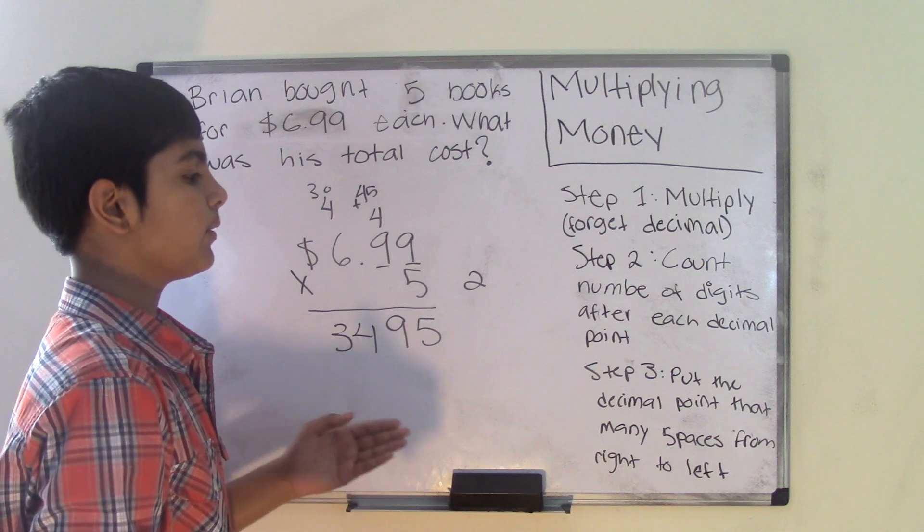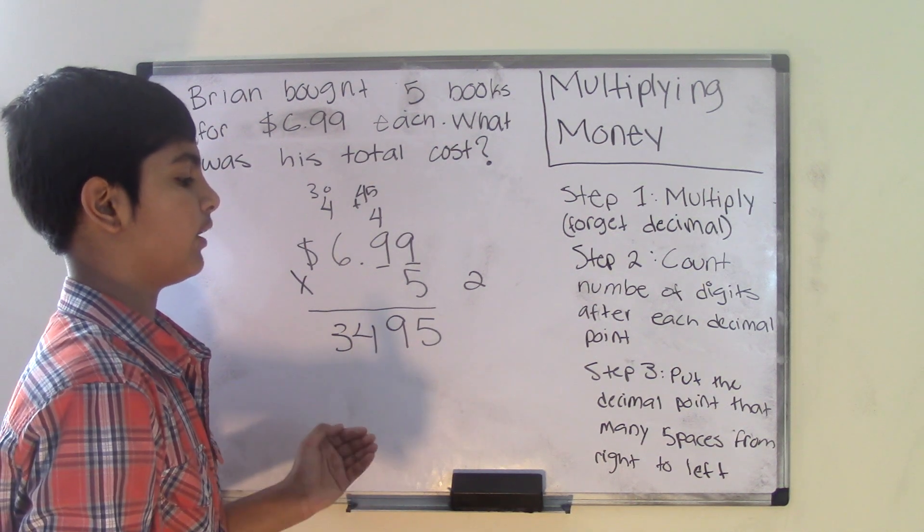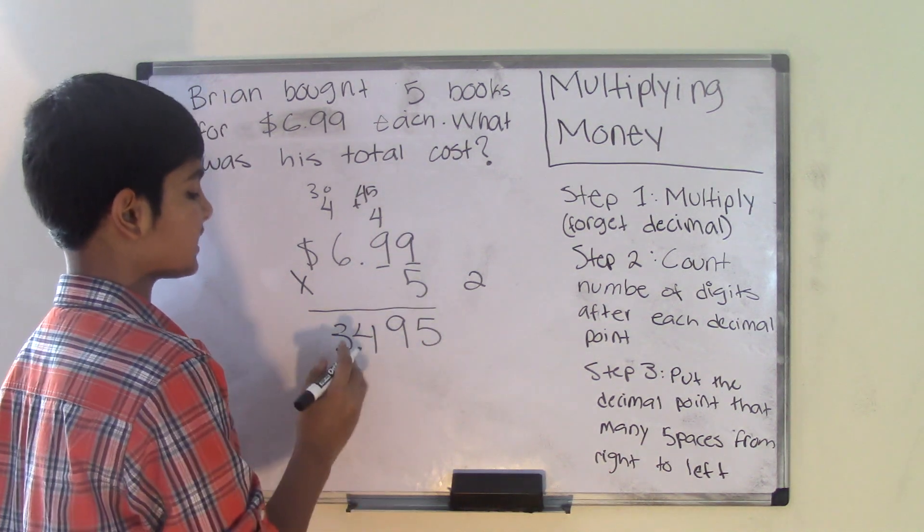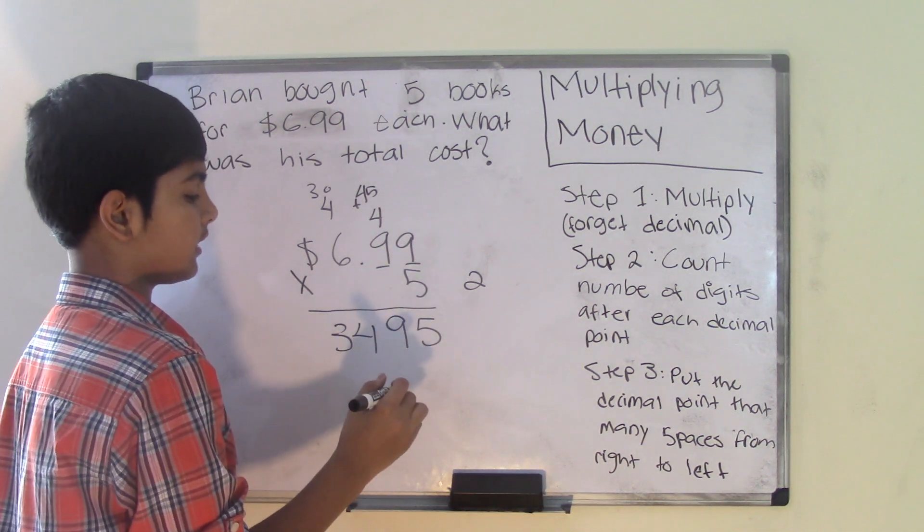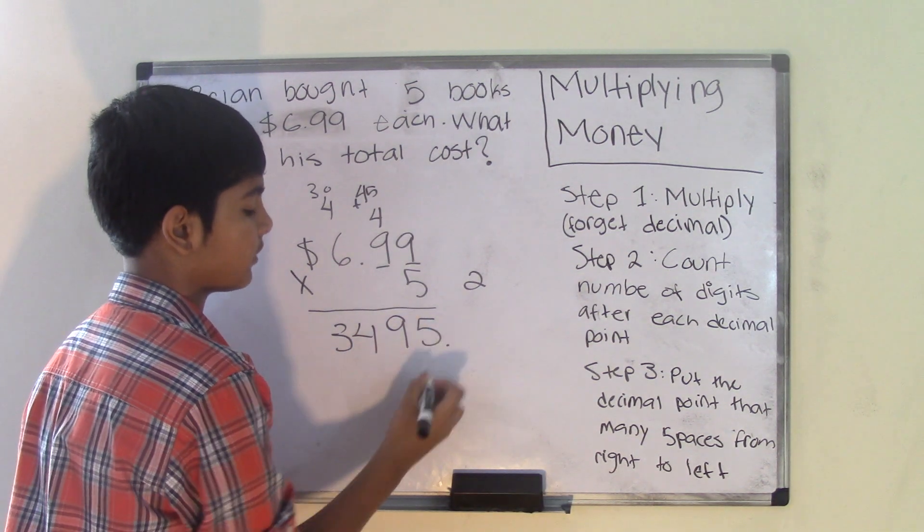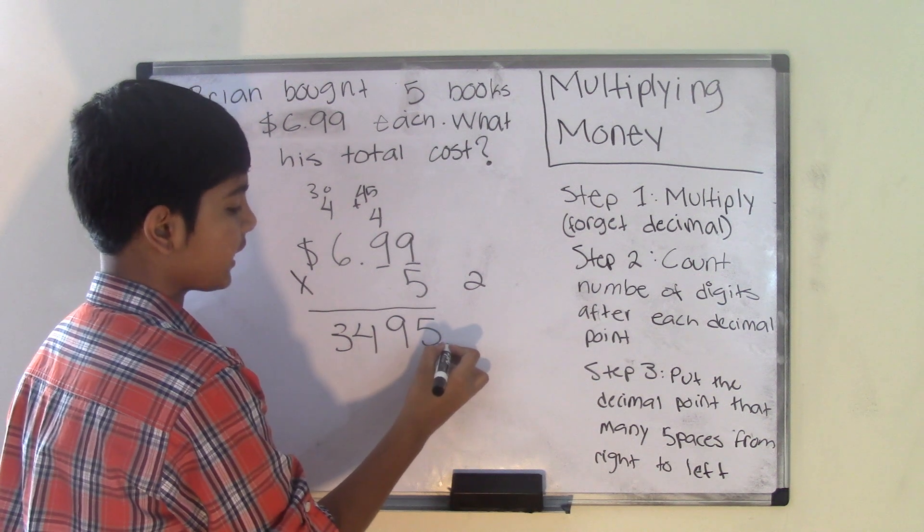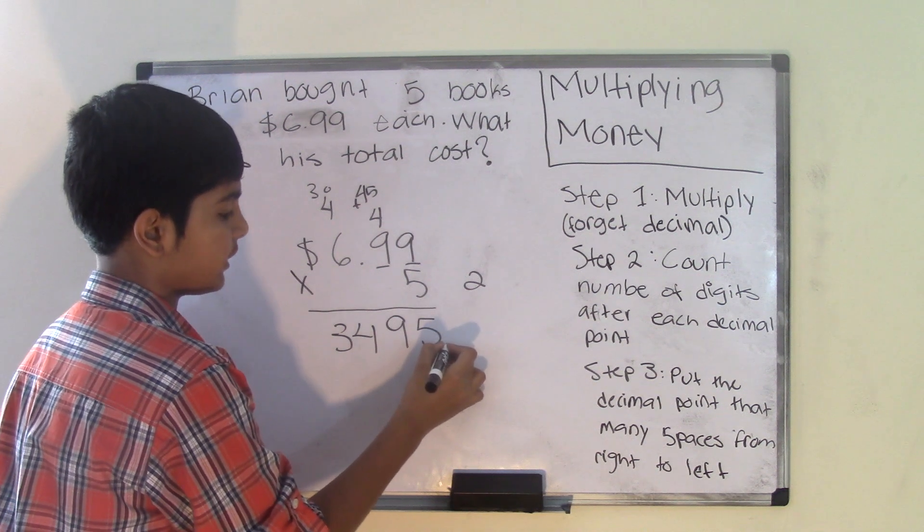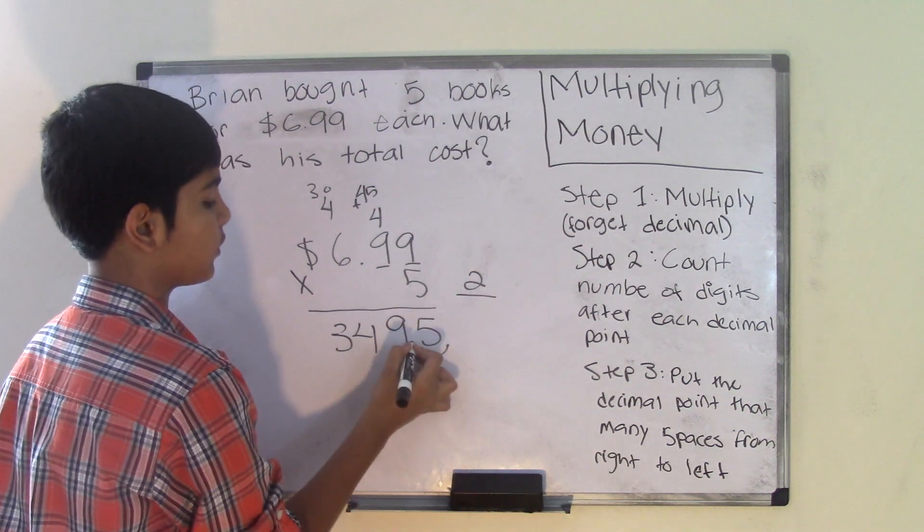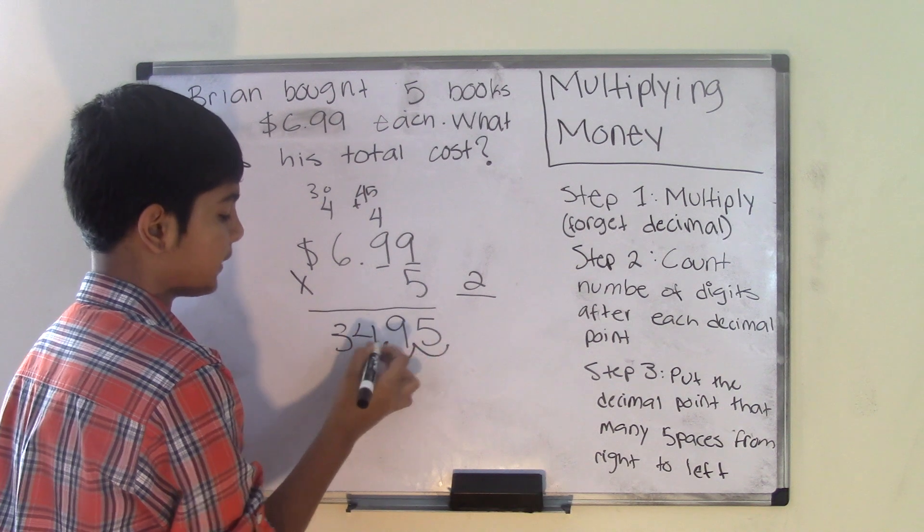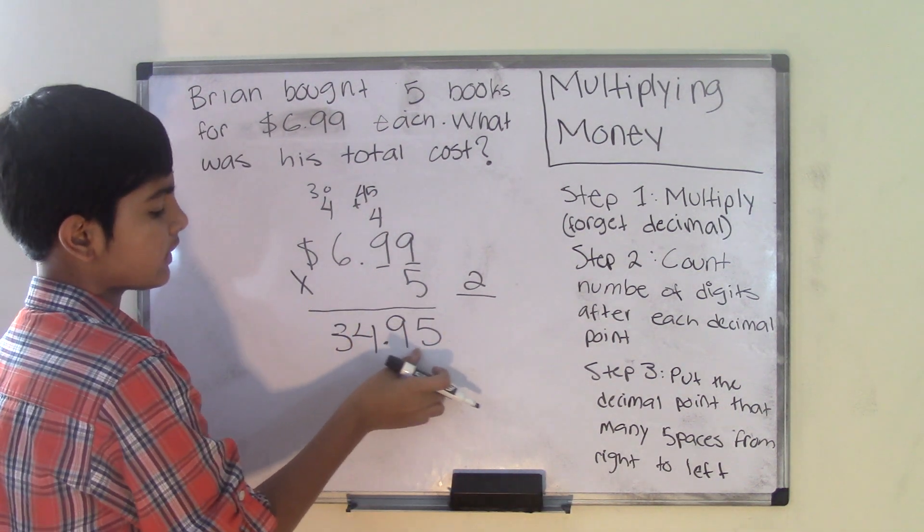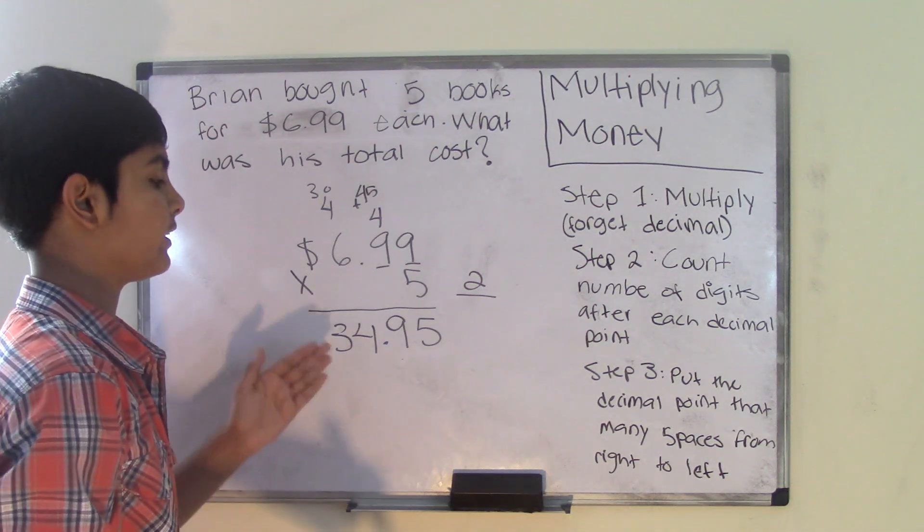Step number three is put the decimal point that many spaces from right to left into your product. Your product is 3495 and I start off by going from right, so I put the decimal point to the right. I need to bring it over from right to left. But how many spaces? Two spaces. So one space, two space, put the decimal point here. Now I have my new number which is a decimal number, 34.95.